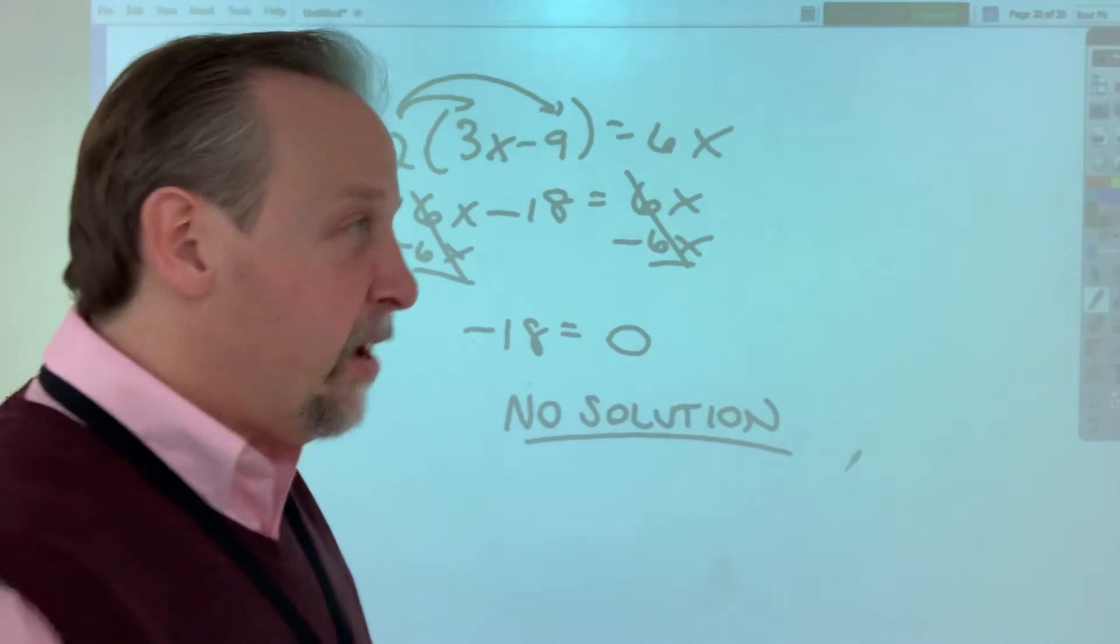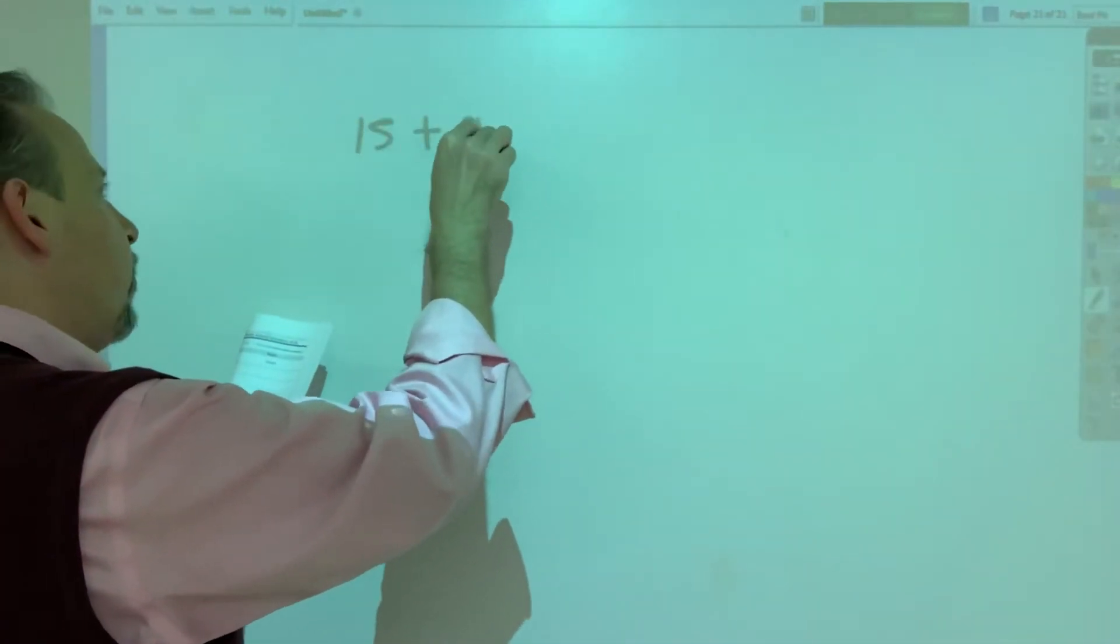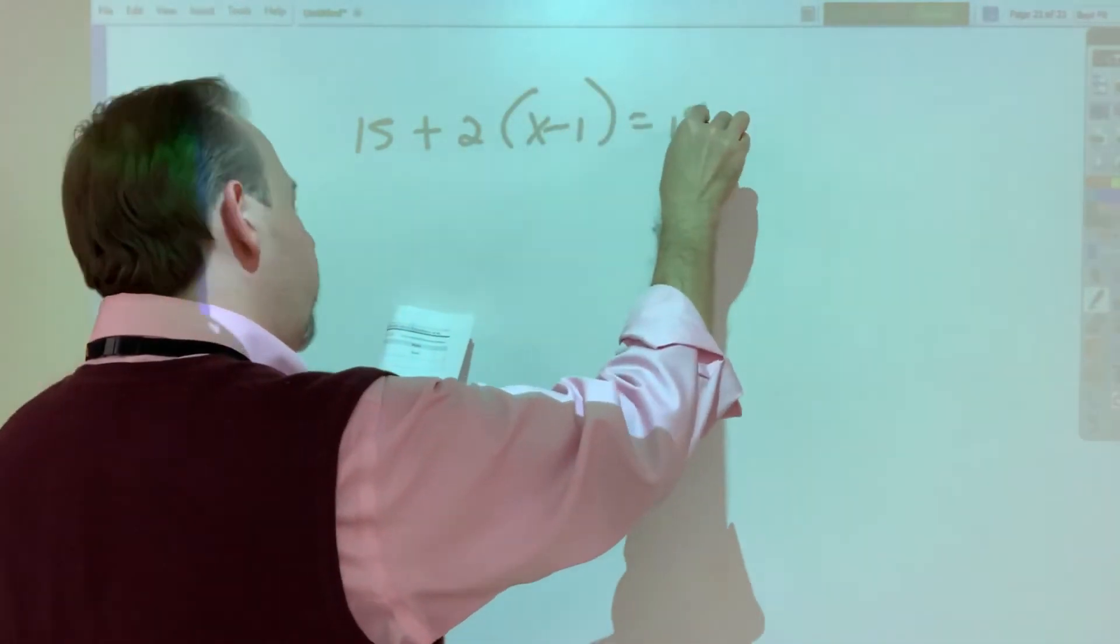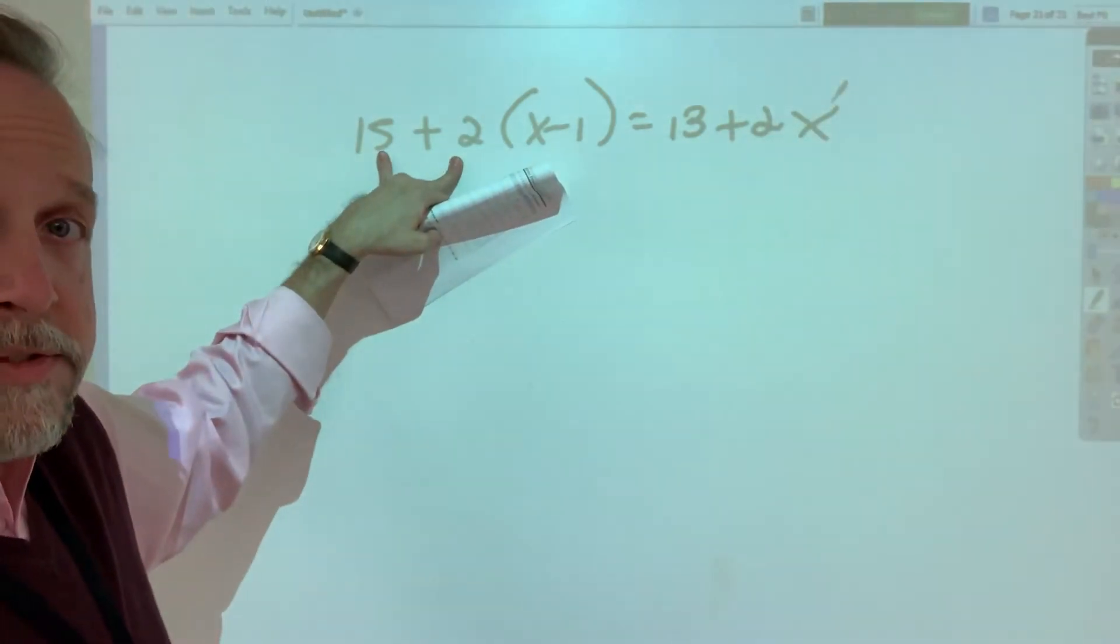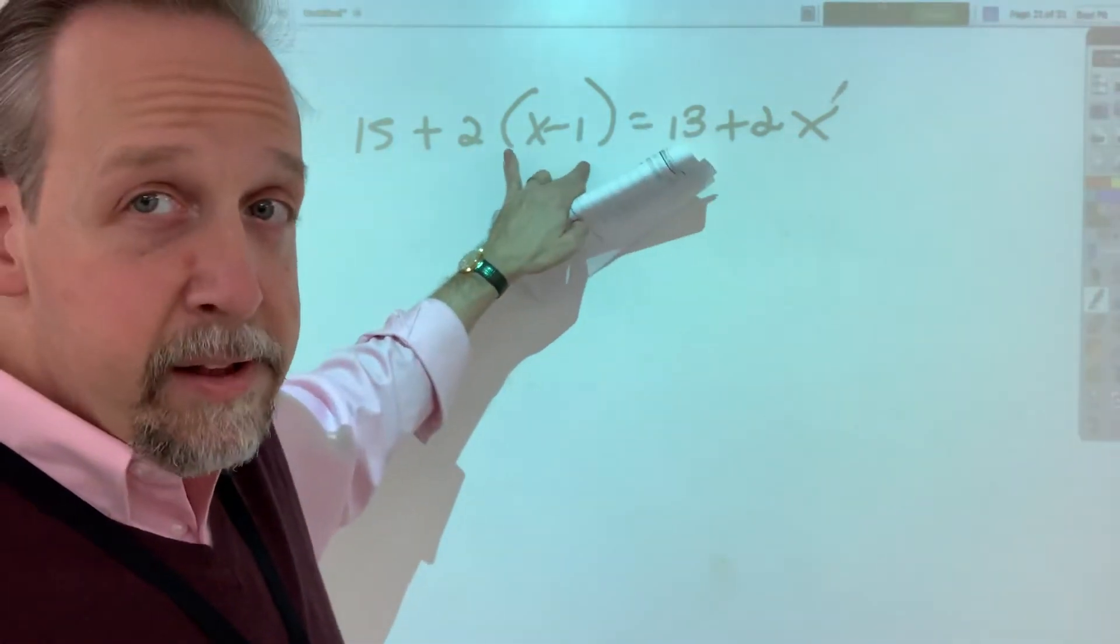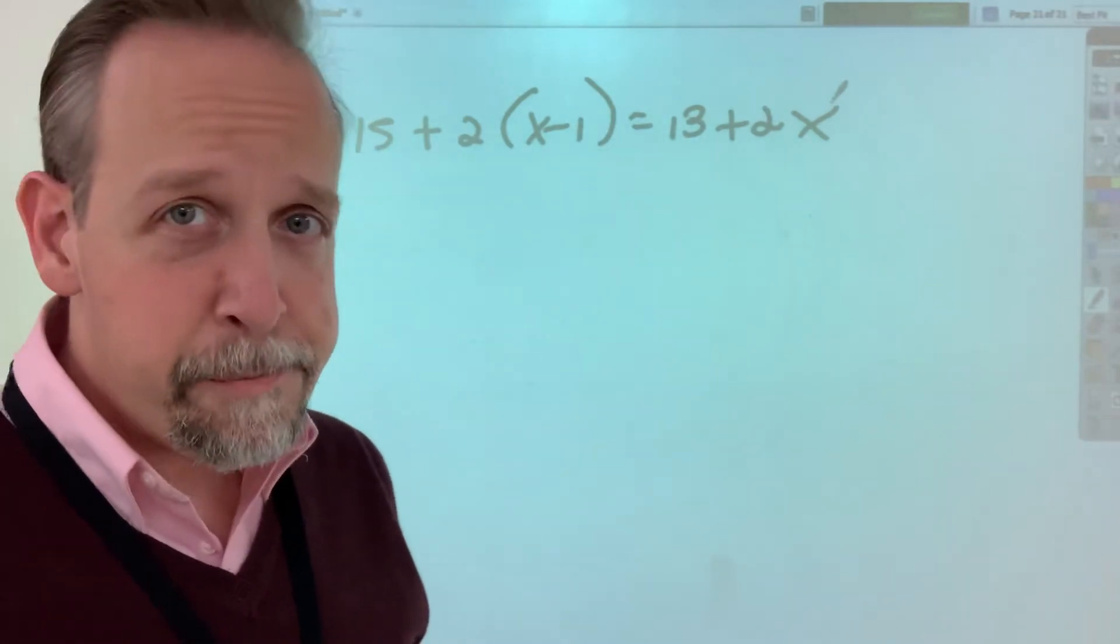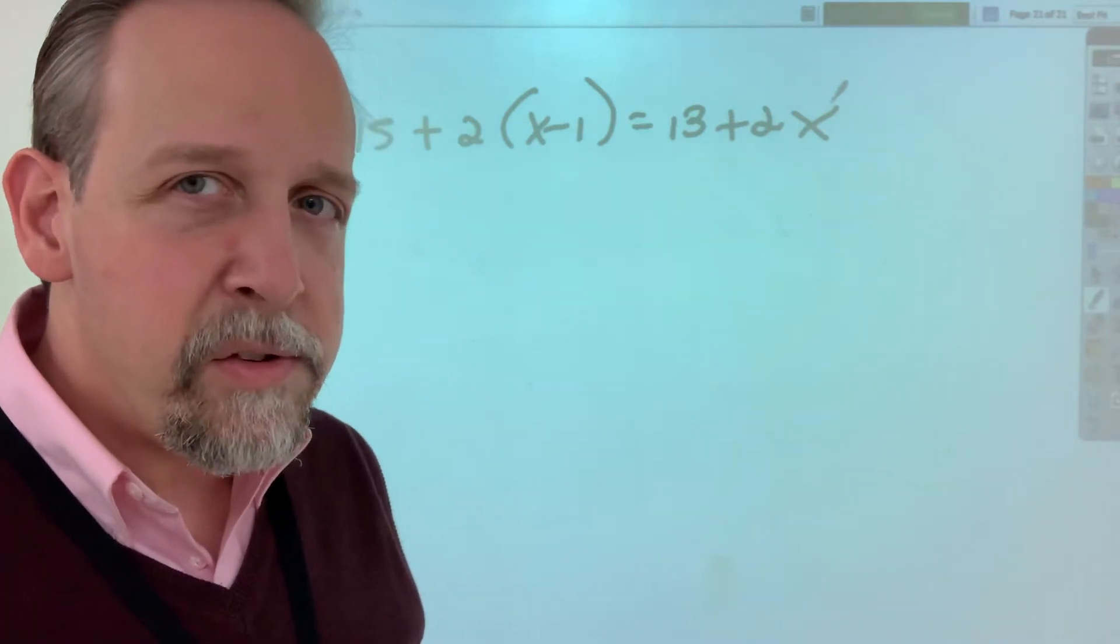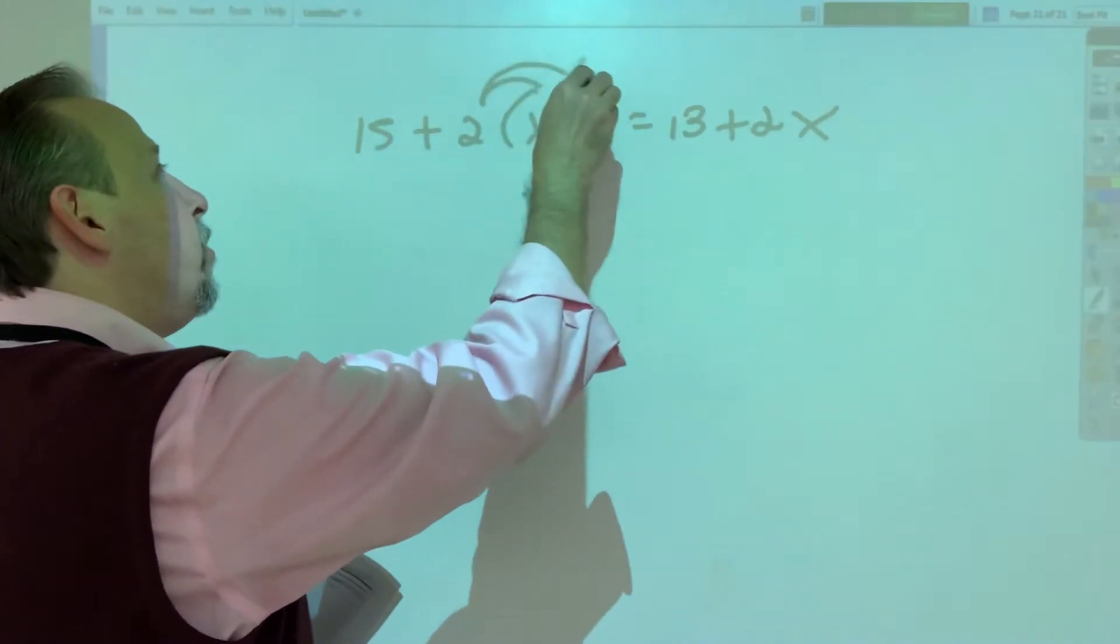And that brings us to the next problem, which is 15 plus 2 times x minus 1 equals 13 plus 2x. First thing is, do not add 15 plus 2. The reason is that 2 is being held onto this quantity with multiplication. And if you remember PEMDAS, multiplication is more important than addition or subtraction. We can't combine 15 plus 2. What we can do is distribute the 2, though.